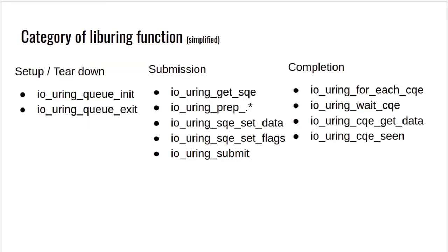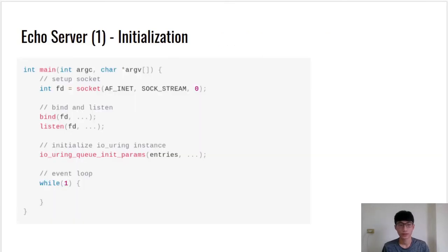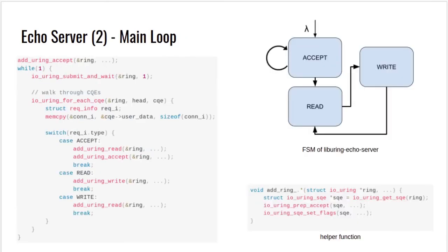Functionality of liburing can be divided into three categories. The first type is responsible for initialization and de-allocating. The second category is responsible for submission, including getting the next available entry, preparing the parameters required for an event, and submitting all batched requests on the queue. The third category is responsible for reaping the completion events from the completion queue, including walking through all completion events and retrieving the next available completion event. Besides introducing the design of io_uring and usage of liburing, we will also give one kind of design of a liburing application. We choose an echo server as an example, divided into three parts. In the first part, we explore how the liburing application does its initializing routine. There is no difference from a normal echo server: we still need to create a socket, bind it to an IP and port where it can listen for connections. The only difference is we need to create an io_uring instance by the API provided from liburing.